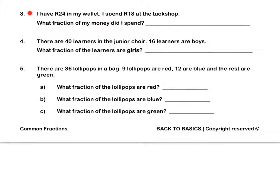Question 3. I have 24 rand in my wallet. I spend 18 rand at the tuck shop. What fraction of my money did I spend? I spend 18 out of 24 rand. I can divide top and bottom by 6: 18 divided by 6 is 3, and 24 divided by 6 is 4.